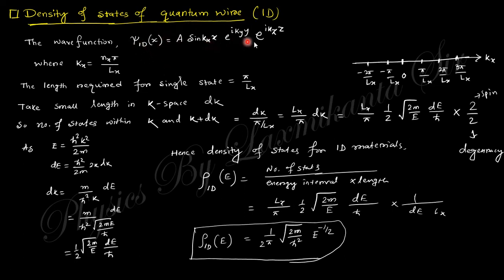Next is density of states for quantum wire. For that, the wave function will be like that, kx equal to this. If you consider this one dimension, the unit for a single state you need is length π/Lx, and small length in k space is dk.